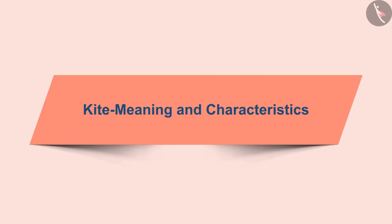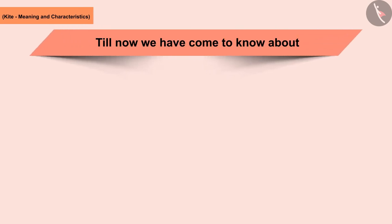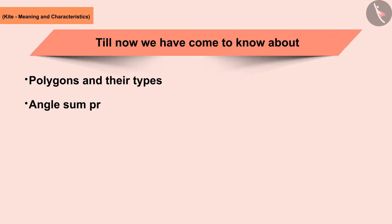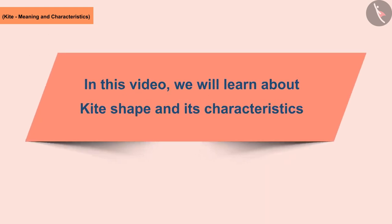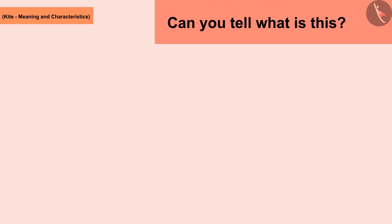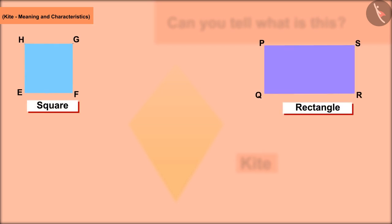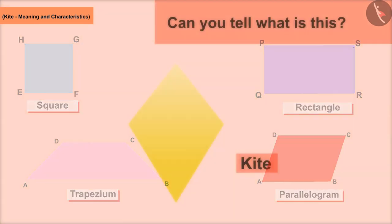Welcome, all of you, to this video. Till now we have come to know about polygons and their types, angles, some properties of quadrilaterals, trapezium. Today in this video we will understand kite and the characteristics of kites. Can you tell what is this? Very good — this is a kite. All of you must have flown kites and had a lot of fun. You know, kite is an important part of geometry, like square, rectangle, trapezium, and parallelogram.